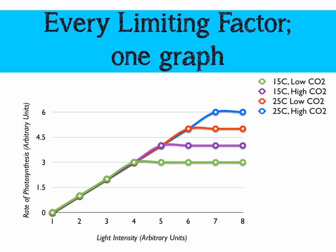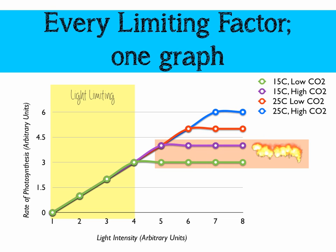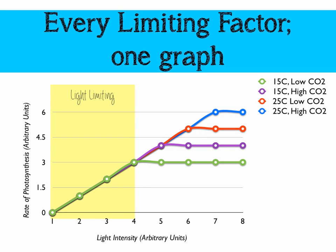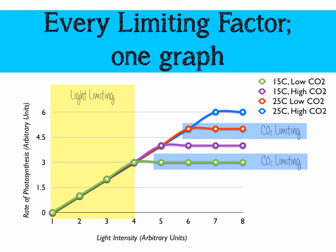We can isolate key regions on this graph. In this region, light intensity is the limiting factor because all the lines are stacked on top of each other — nothing we're changing from line to line is making a difference, so the limiting factor must be light intensity. In another region, temperature is limiting because the 15°C lines are much lower than the 25°C lines. There are also regions where CO2 is limiting: the 15°C with low CO2 is much lower than 15°C with high CO2, and the same is true for the 25°C data.